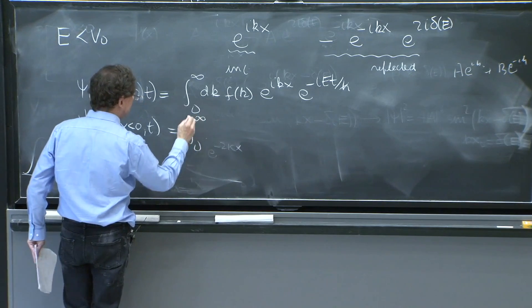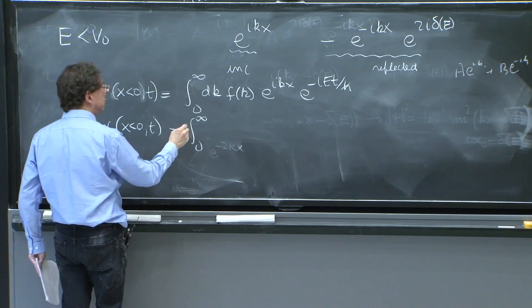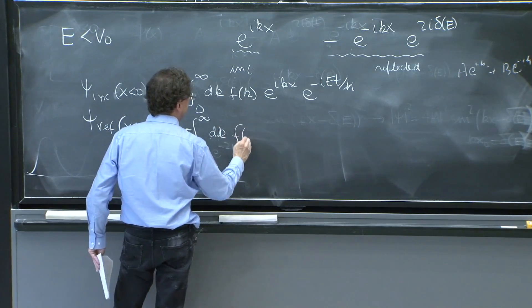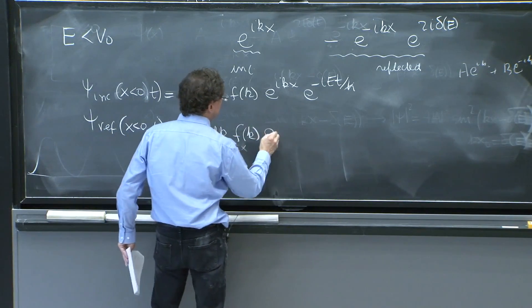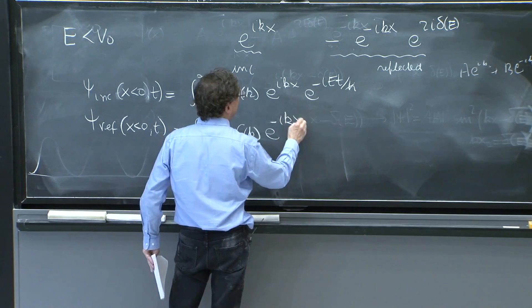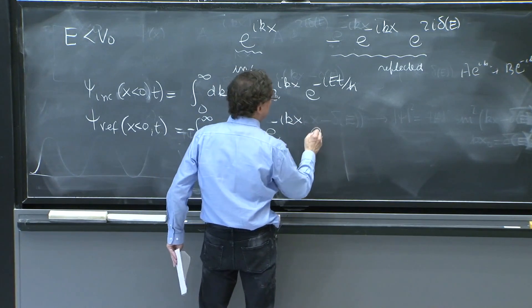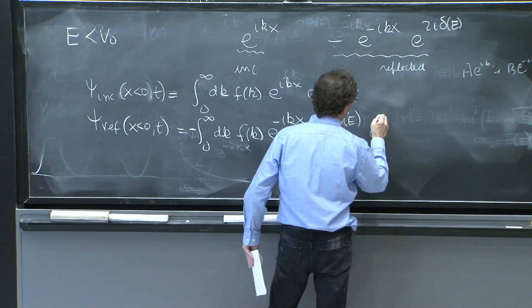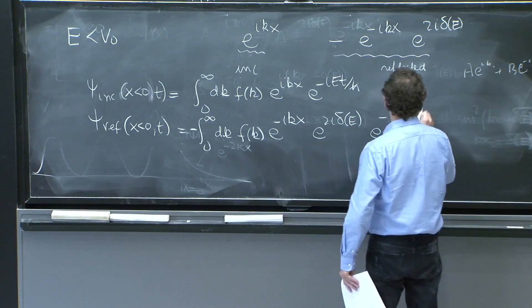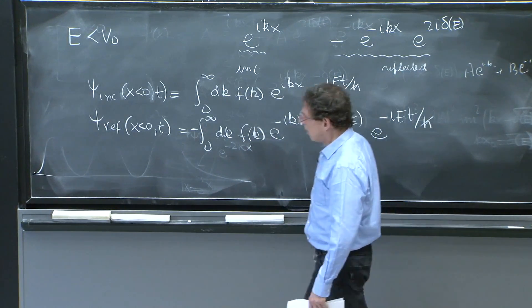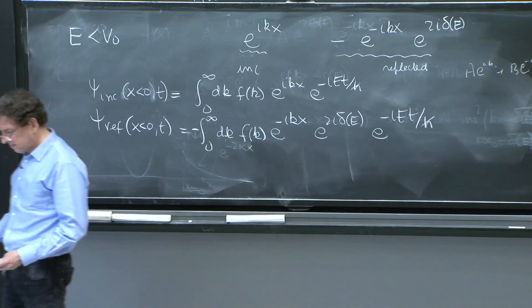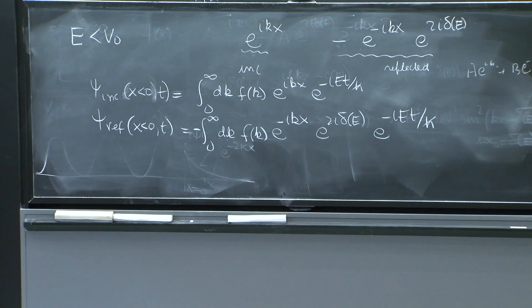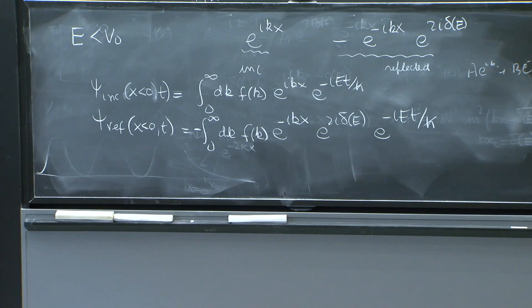And it would be 0 to infinity, a minus in front, because there's a minus, dk f of k e to the minus ikx e to the 2i delta of e, e to the minus iet over h bar. That's the reflected wave superimposed. So now you've constructed everything.